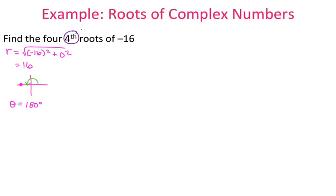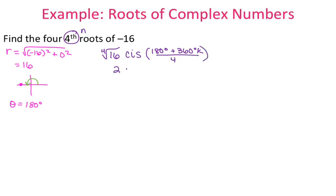Since I want the fourth root, n is 4. Working through the formula: it's the fourth root of 16 times cosine i sine of theta — which is 180 — plus 360 times k, all over n, which is 4. Simplifying: the fourth root of 16 is 2, and cosine i sine of 180 divided by 4 is 45, plus 360 divided by 4 is 90 degrees times k. Now, k helps us find all of the roots.